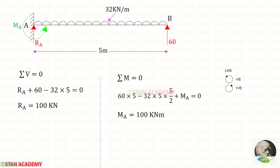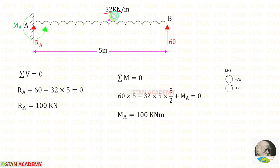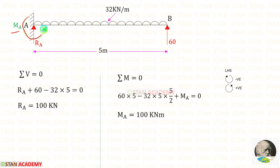Now let us apply sigma M equals 0 and find MA by taking moments about A, moving towards the left-hand side: clockwise is negative and anticlockwise is positive. RB is acting in the anticlockwise direction — positive — with a distance of 5. The UDL is acting in the clockwise direction — negative — and for the UDL we multiply with distance and distance by 2, where the distance is 5, giving 5 into 5 by 2. Assuming MA acts anticlockwise, MA is positive. Finally, MA = 100 kNm.